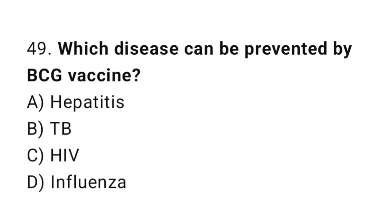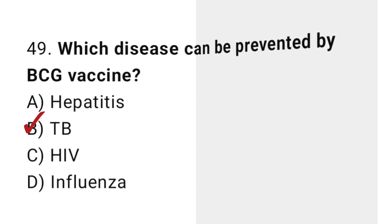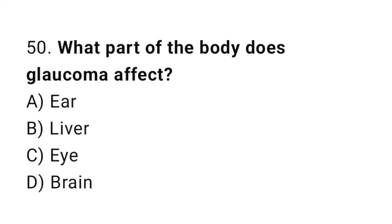Question number forty-nine: which disease can be prevented by the BCG vaccine? The correct answer is B, TB. Question number fifty: what part of the body does glaucoma affect? The correct answer is C, eye.